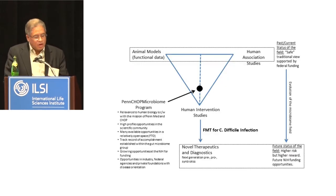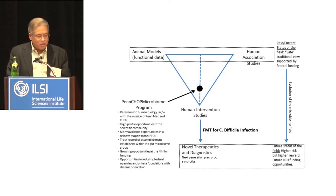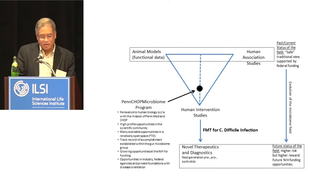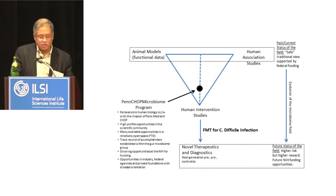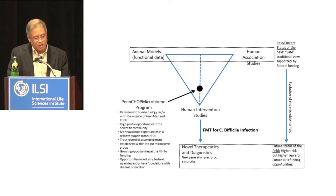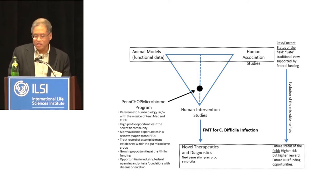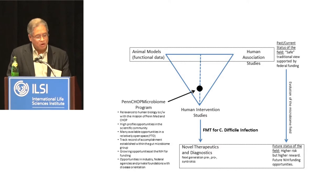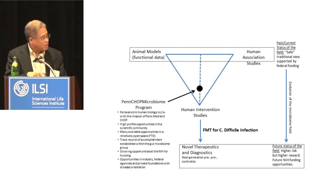This is a conceptual overview of where we currently are in the microbiome space. At the very top, we have animal model data showing functionality in terms of the microbiota and health and disease, and we have human association studies. Sadly, the only intervention we have now that deeply intervenes on the microbiota is fecal microbiota transplantation for a specific disease — clostridial difficile infection. But we want to get to new therapeutics and diagnostics. That's the evolution of the field.